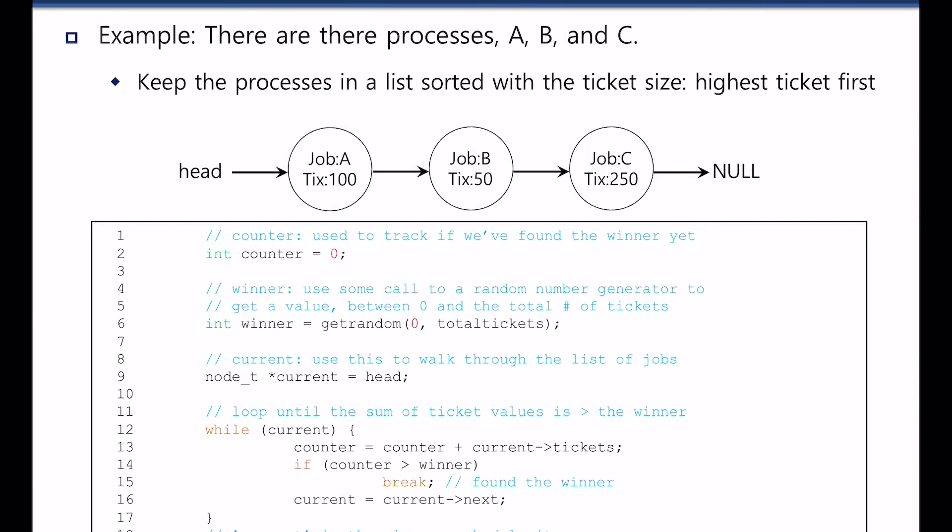Let's discuss the implementation aspect of lottery scheduling. Usually, the number of processes in the system are maintained using a linked list. Here, there are three processes: Process A, process B, and process C. And each process has tickets of 150 and 250.